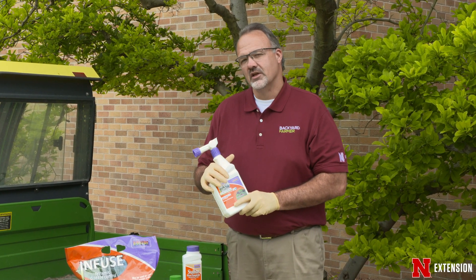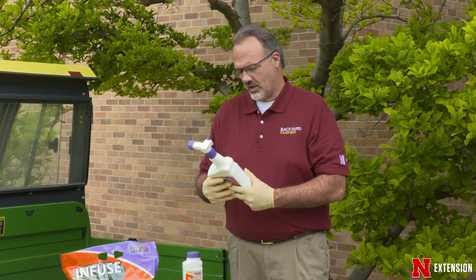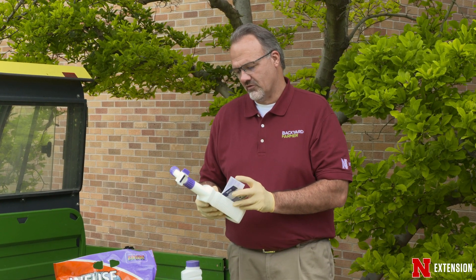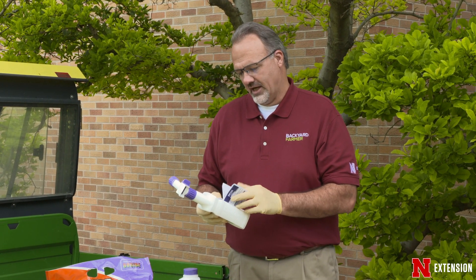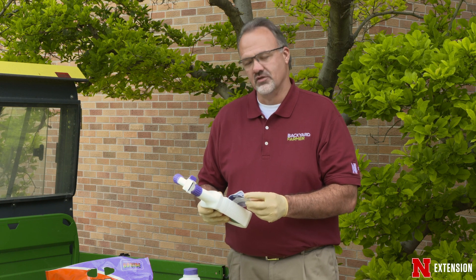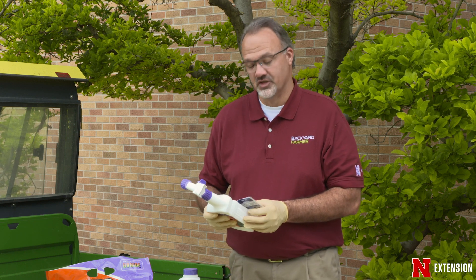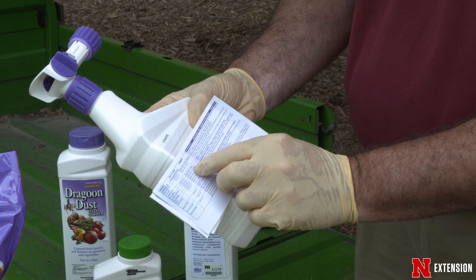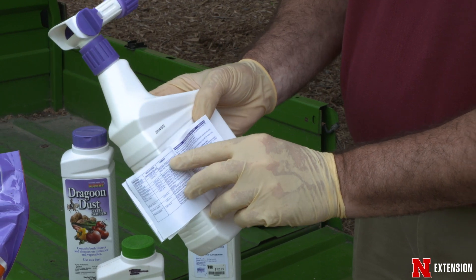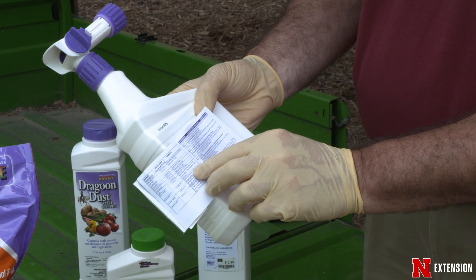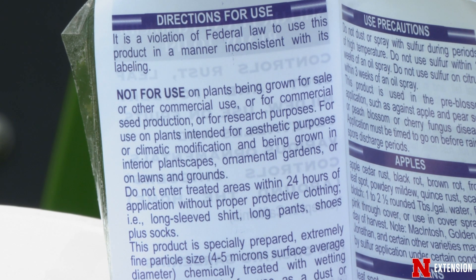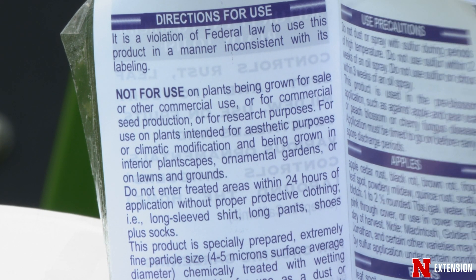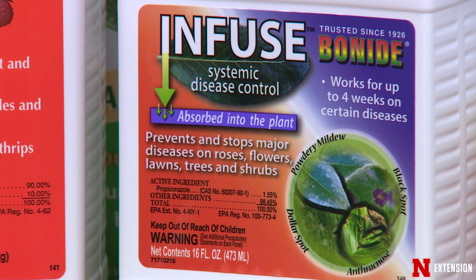The other thing that we want to pay attention to on these products is to look at the pre-harvest interval for anything we're going to use that is going to be going into a food production or food system. For example, this product is not labeled for food production — it's only labeled for non-bearing apple trees. So you could spray your apple trees before they're in fruit production with this particular product.